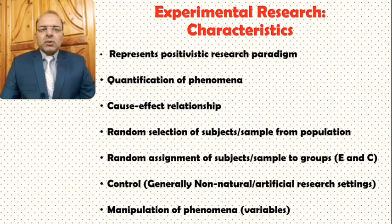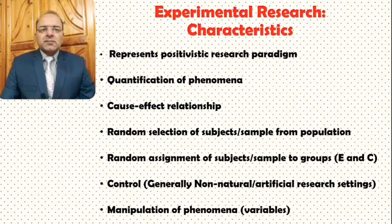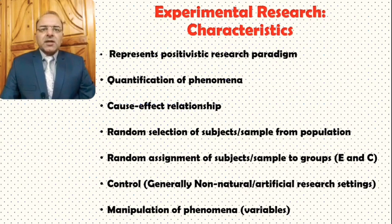Generally, experimental research is conducted in an environment of control. There is control, which actually means that the settings of experimental research are non-natural — or we can say they are artificial research settings — as compared to more qualitative researches which take place in more naturalistic types of environments or settings. Experimental research happens in a more controlled and non-natural, artificial type of research setting.